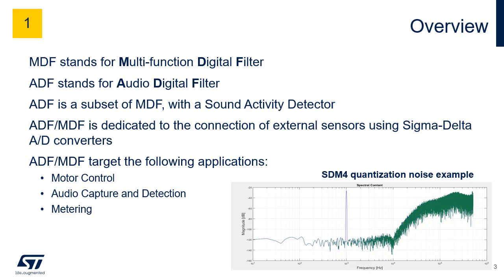The Multifunction Digital Filter, or MDF, and Audio Digital Filter, or ADF, are high-performance modules dedicated to the connection of external Sigma Delta modulators for sample acquisition. They also support configurable filter functions. ADF is a subset of MDF, except for the Sound Activity Detector, which is supported only by ADF.